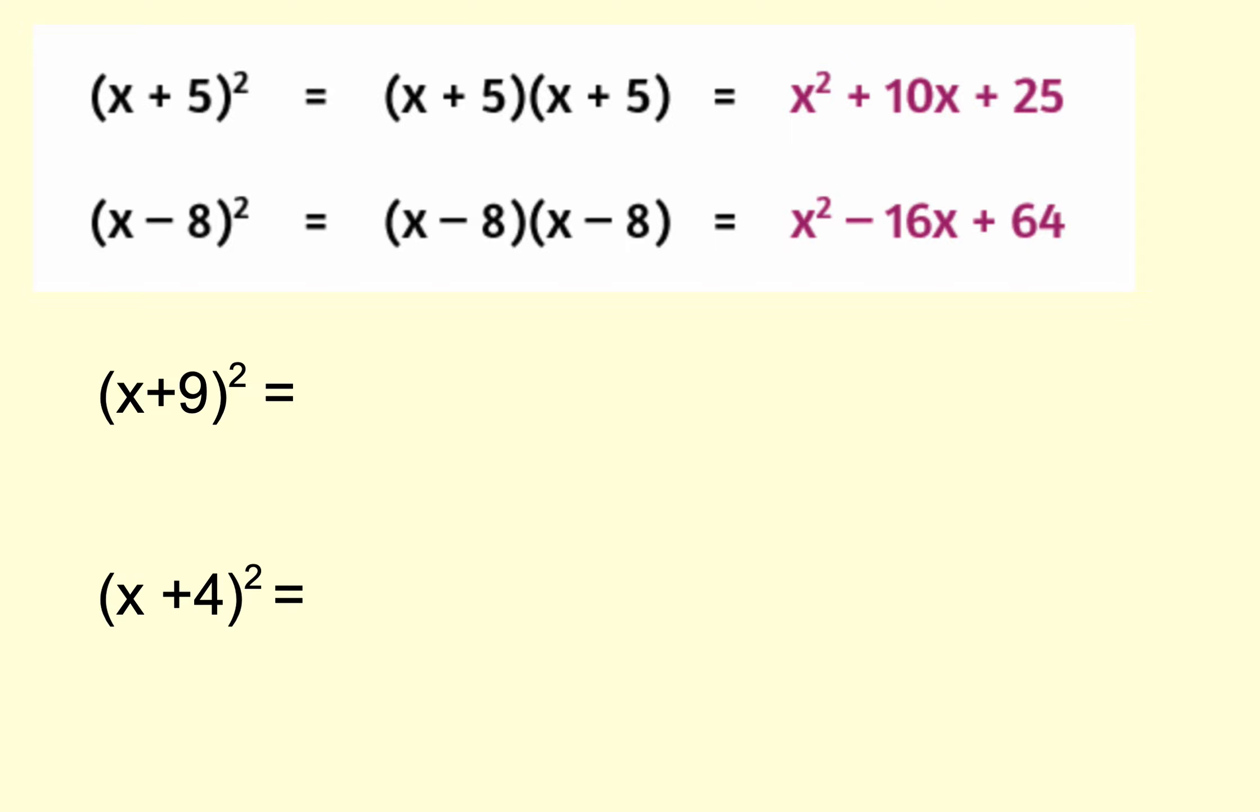Let me demonstrate right here. I'm going to write it out twice, x plus 9, x plus 9. Then I'm going to use, first I'm going to multiply these two, and that'll be x squared.